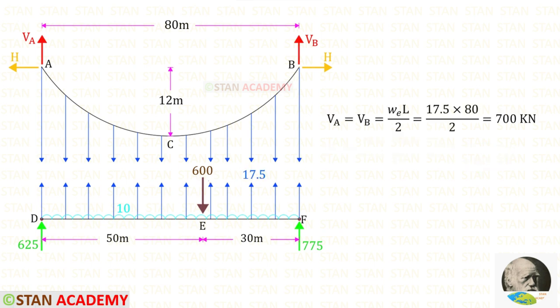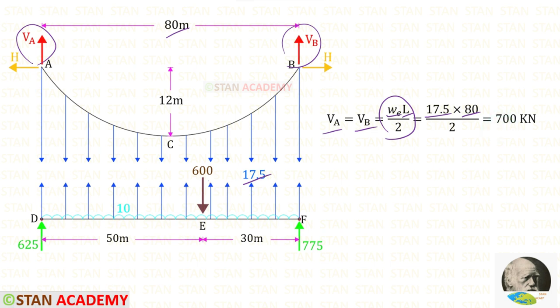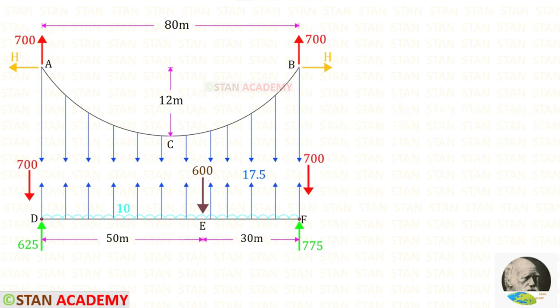Now in the cable, let us find the vertical reactions VA and VB. We can use the formula WE·L/2. WE is 17.5 and L is 80, so for VA and VB we will get 700 kN. In the cable, the vertical reactions are acting upwards, but in the girder they will be acting downwards.